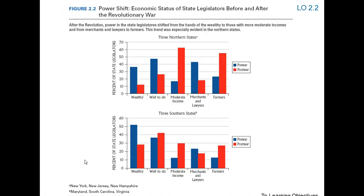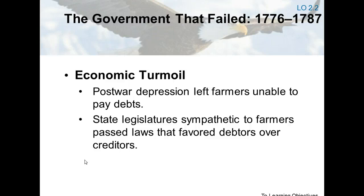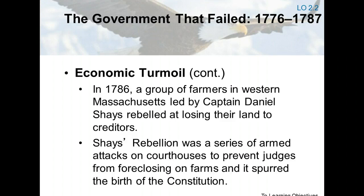A post-war depression had left many small farmers unable to pay their debts, and they were threatened with mortgage foreclosures. With some state legislatures now under the control of people more sympathetic to debtors, a few states adopted policies to help debtors, favoring them over creditors. In western Massachusetts, a small band of farmers led by Captain Daniel Shays undertook a series of armed attacks on courthouses to prevent judges from foreclosing on farms. Shays' Rebellion spurred the birth of the Constitution and reaffirmed the belief of the Philadelphia delegates that the new federal government needed to be a stronger one.